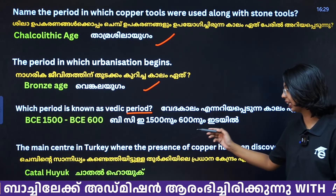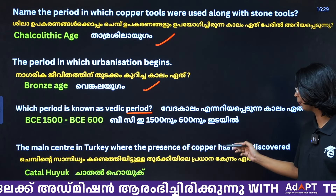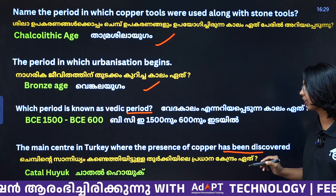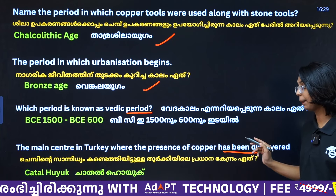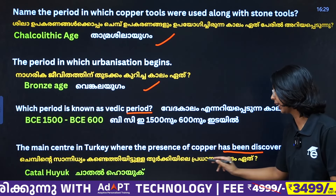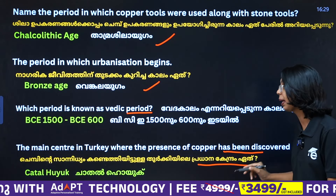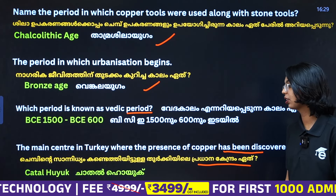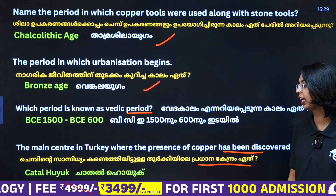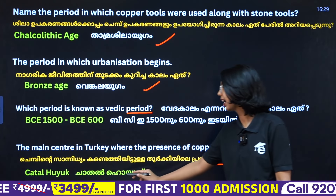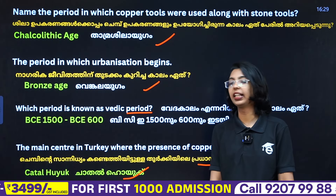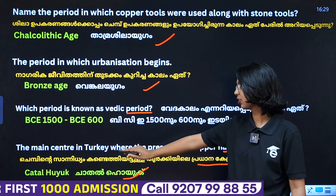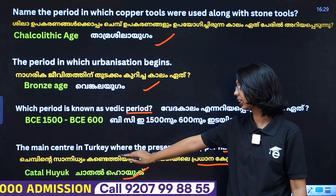Next, we see the main center in Turkey where the presence of copper has been discovered. If you study it, the main name associated with copper discovery is found in Turkey.